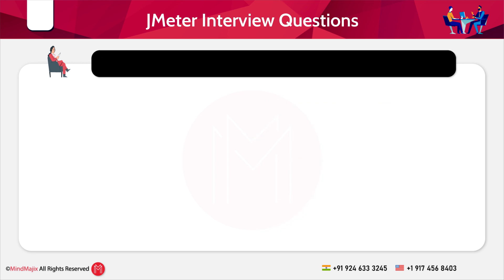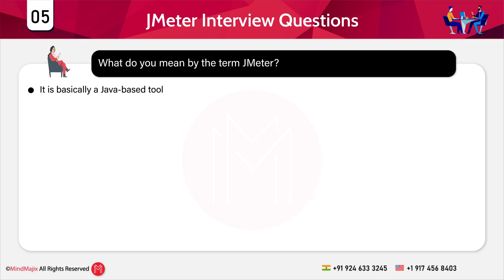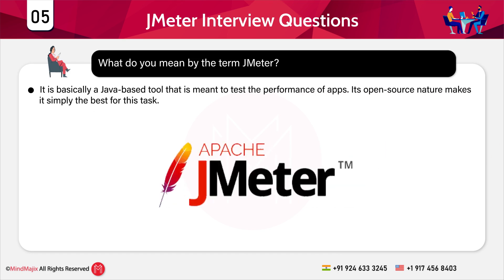The next question is: what do you mean by the term JMeter? JMeter is basically a Java-based tool that is meant to test the performance of applications. Its open-source nature makes it simply the best for this task. A number of performance-related tests can be handled with this tool. It doesn't matter whether it's web services or web-based apps — moreover, it is capable of handling databases as well as FTP servers.